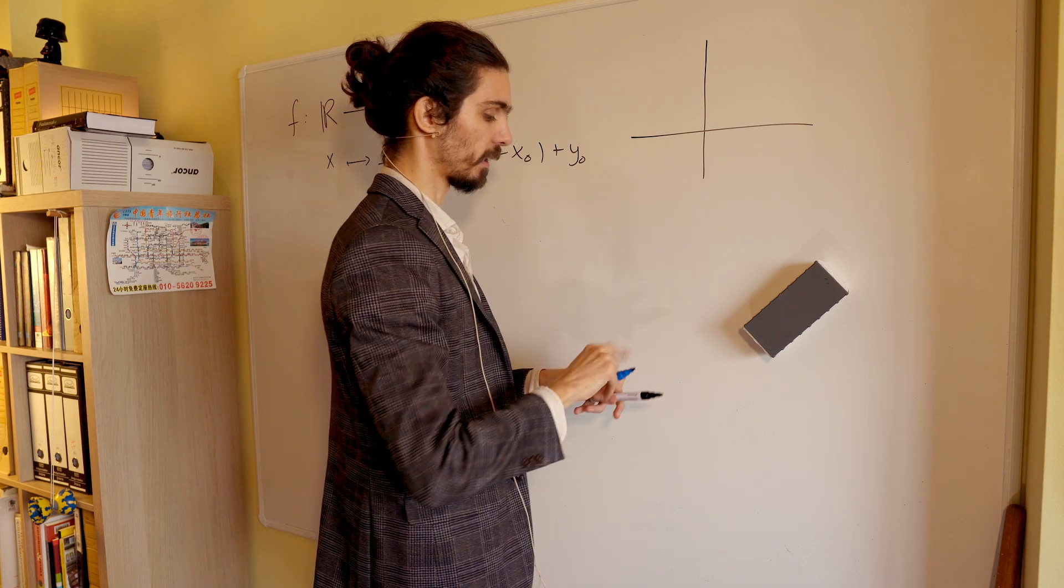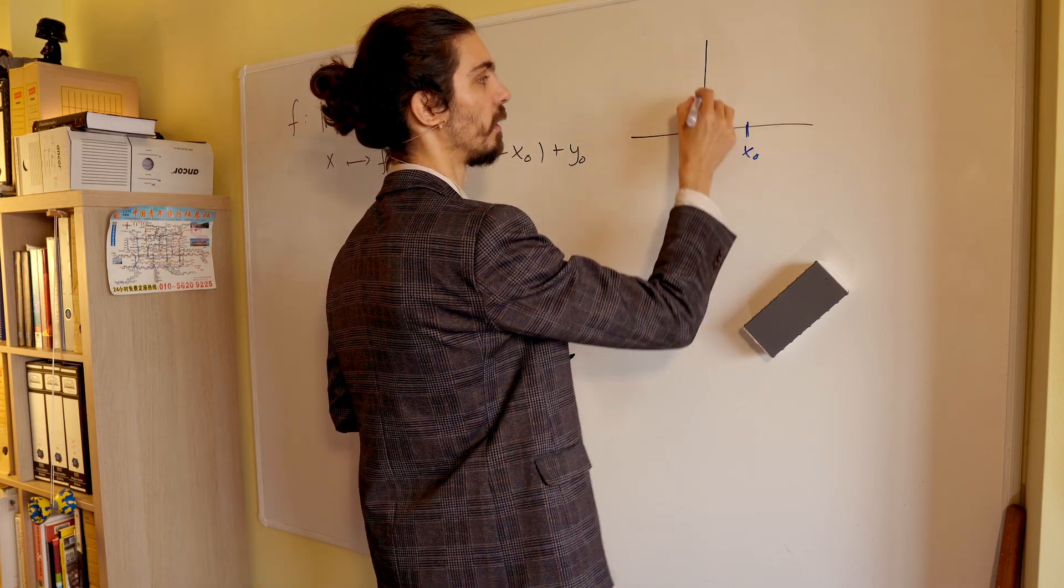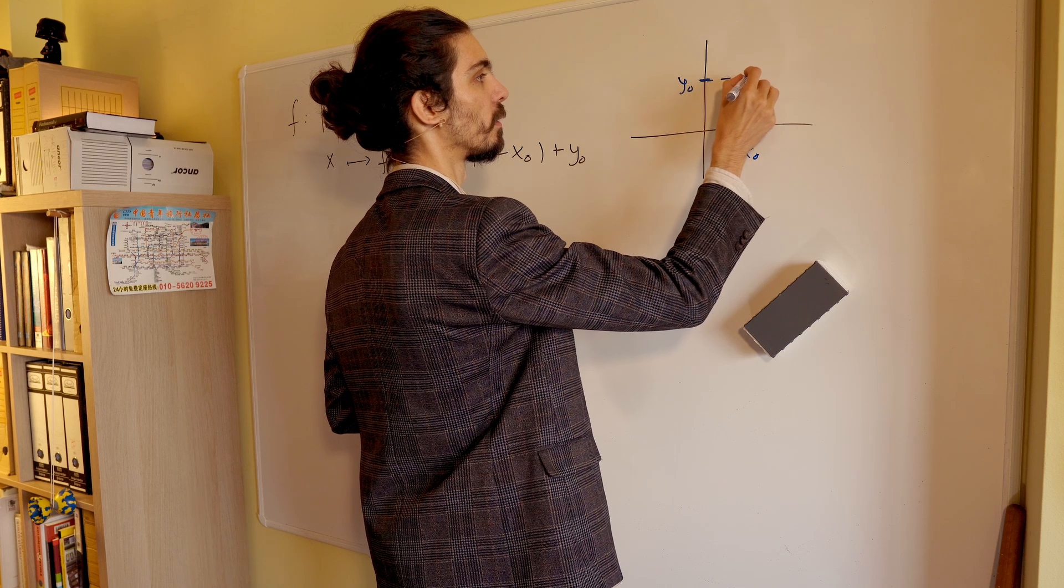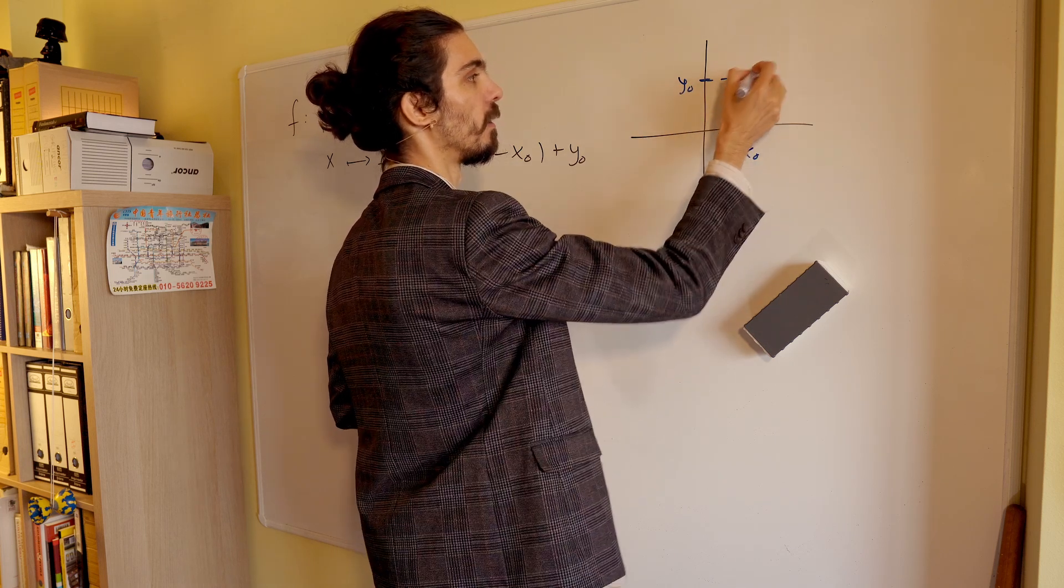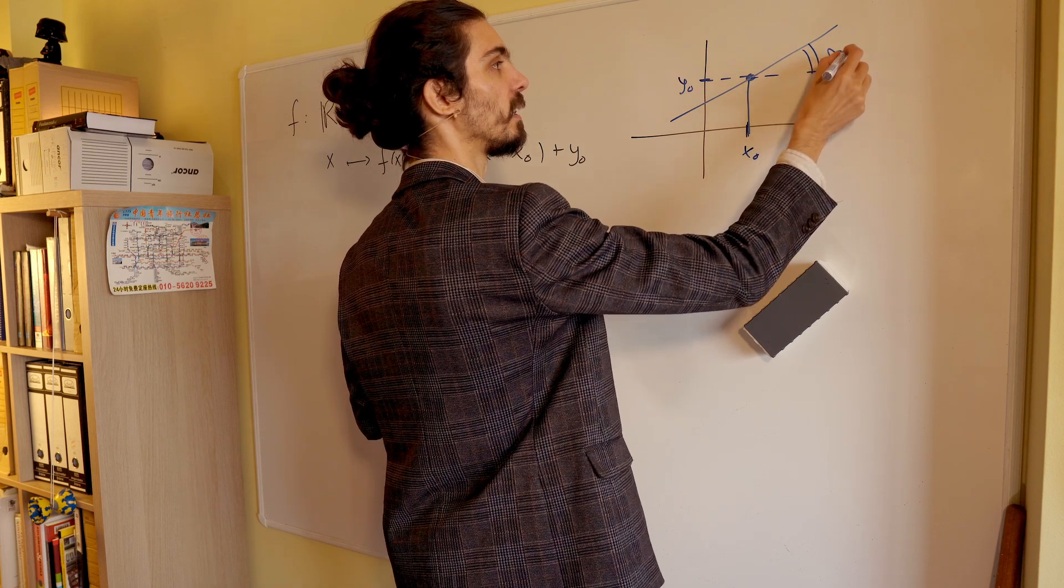It's a line that contains the point x0 and y0, and that's slope m. So this thing is m.